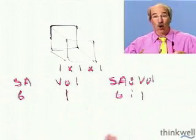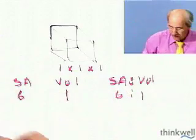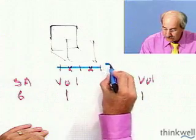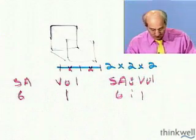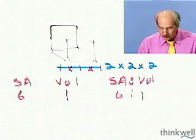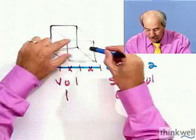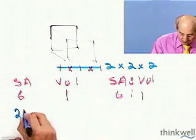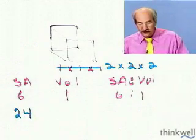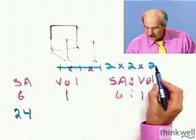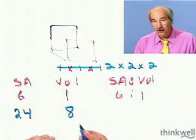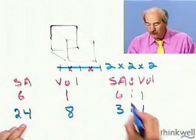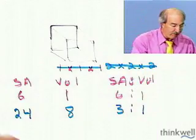Now let's make it grow into a giant amoeba — a 2×2×2 cube. Each face is two times two, which is four, times six faces equals a surface area of 24. The volume is two times two times two equals eight. So the ratio is 24 to 8, which is 3 to 1. Already the ratio has dropped.